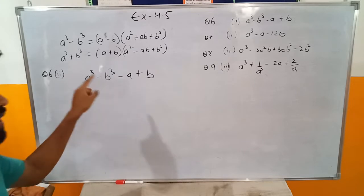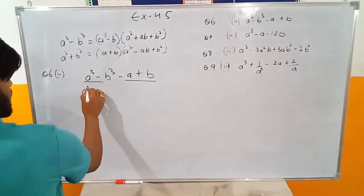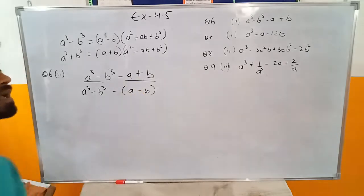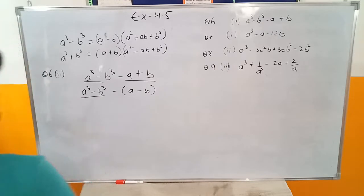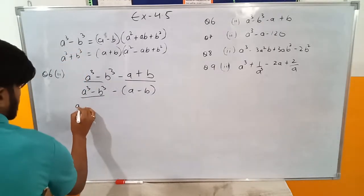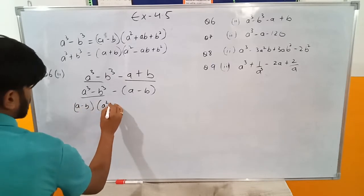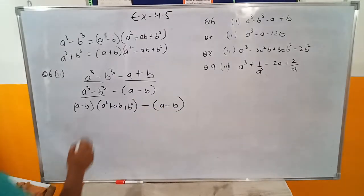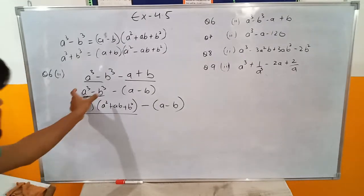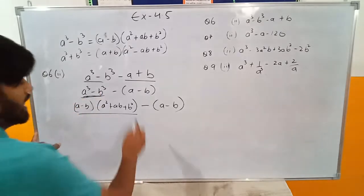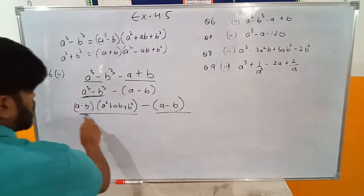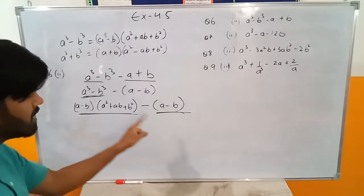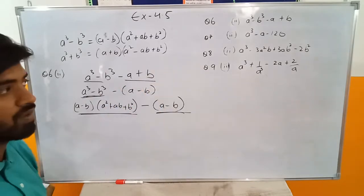We can pair the terms. I can write a cube minus b cube, then minus bracket a minus b — taking minus outside, so plus becomes minus and minus becomes plus. Now I can use the first formula: a cube minus b cube equals a minus b bracket a square plus ab plus b square, minus bracket a minus b. If you notice carefully, a minus b is common in both terms.